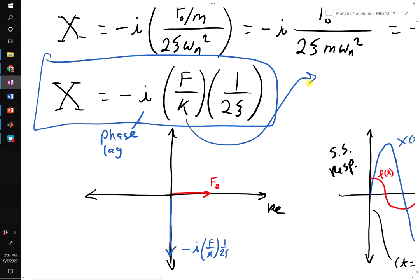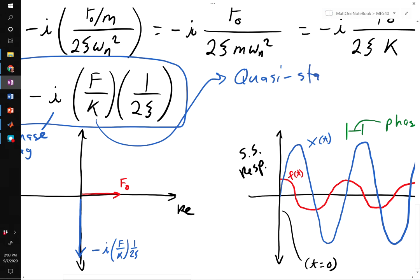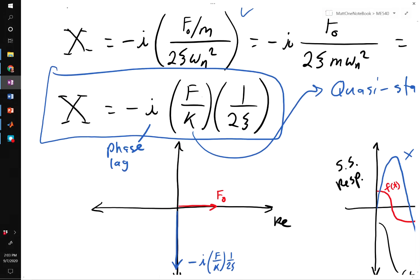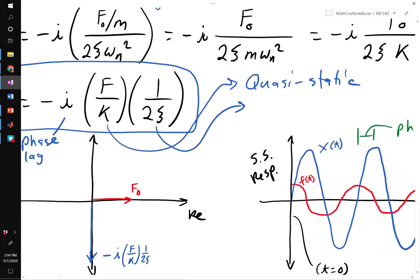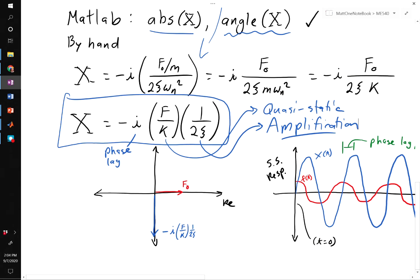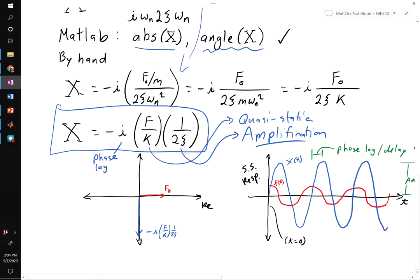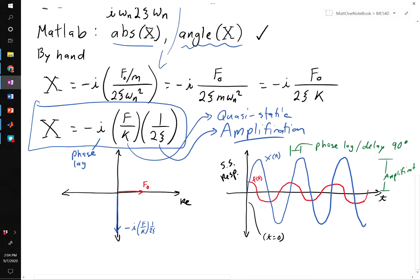The F over k here, this is what we call the quasi-static response. If we didn't have any derivatives, if we're just doing a basic statics problem, you apply a force, you have a stiffness k. The displacement that you get is F over k, or F equals kX. That's what we would get if we had a boring system that didn't have any dynamics. And here we have 1 over 2 times the damping ratio. This is our amplification, or our dynamic amplification. That's what causes things to break. Using what we've reviewed on complex exponentials, you could actually sketch this all out without having to go to MATLAB. Let's just talk about that quickly.